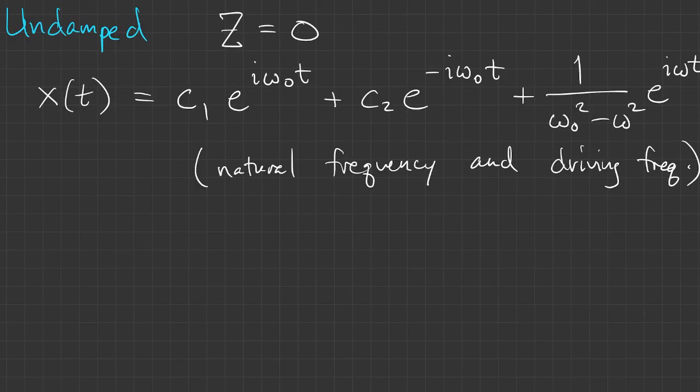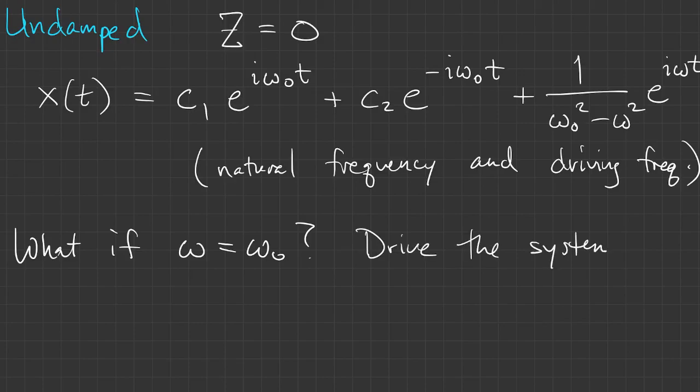Clearly, if omega is close to omega nought, then the amplitude of the driving part becomes rather large. What happens if omega exactly equals the natural frequency? In other words, what happens if we drive the system at precisely its natural frequency?